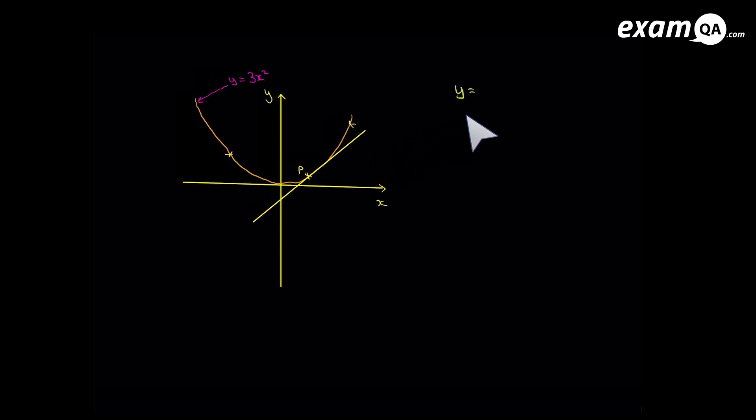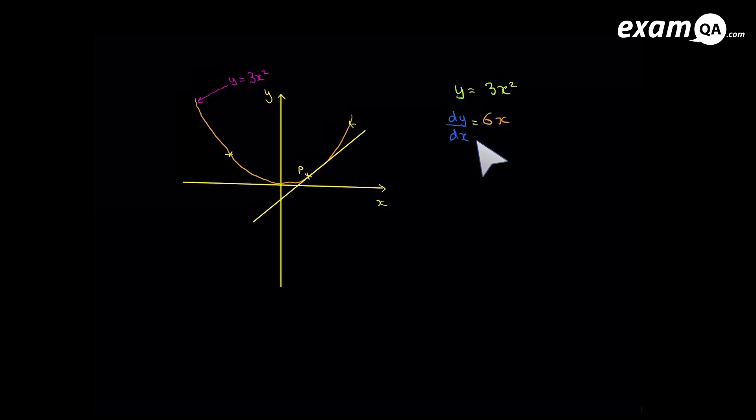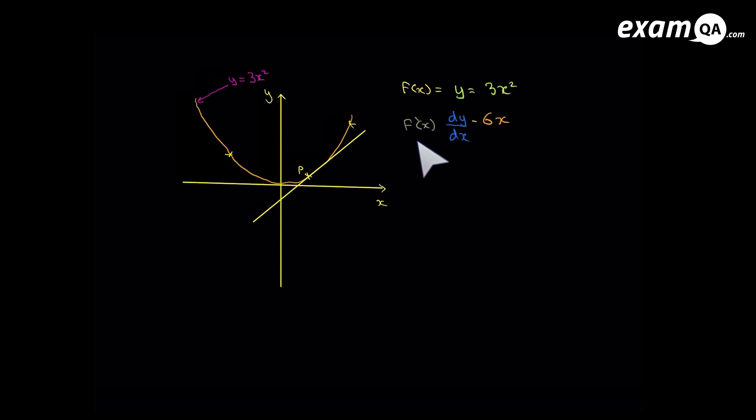So here we have the equation y equals 3x squared. And what happens with differentiation is, the power times to the number in front. So the 2 here will times to the 3. And that 3 would become 6. The x would just stay. And the power reduces by 1. So 2 would now become 1. And of course, when you have x to the power 1, the 1 needs not to be there. And we call this not y anymore, but we call it dy dx. Now remember that y could also be written as fx. So if you differentiate it, which we've done, and got the dy dx, you can also call it f dash x.